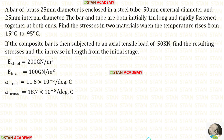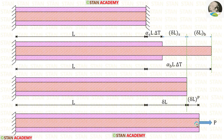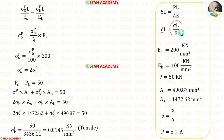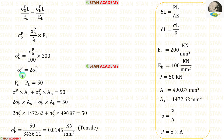Now for the second part: the composite bar is subjected to an axial tensile load of 50 kilonewton. We need to find the resulting stresses and the increase in length. Due to the tensile load the bar will expand further by delta_l_p. The expansion will be the same in both steel and brass. Using the formula for change in length (sigma × L / E), since expansion is equal in both materials, we set the expressions equal and also apply the condition that total load equals the sum of loads in steel and brass.